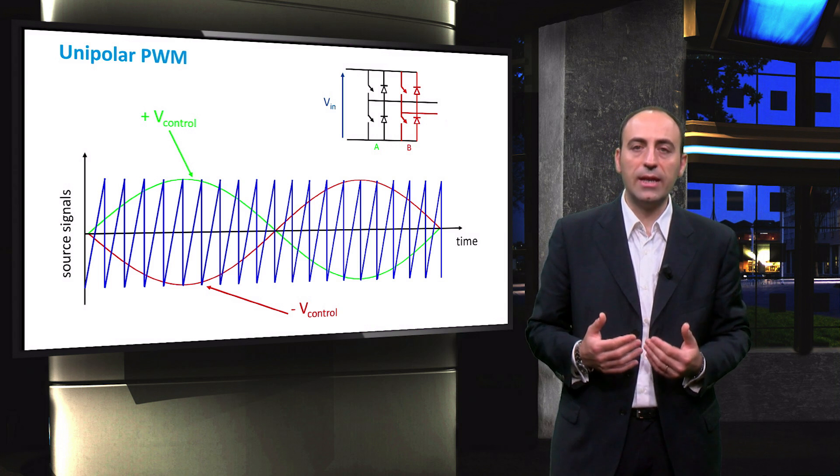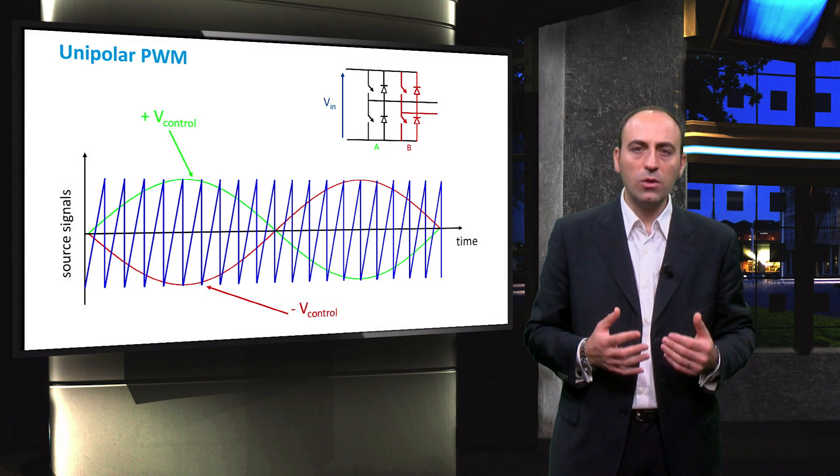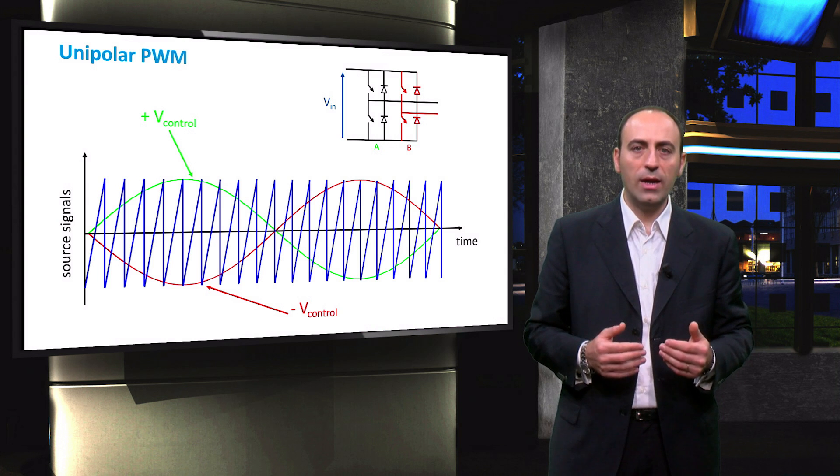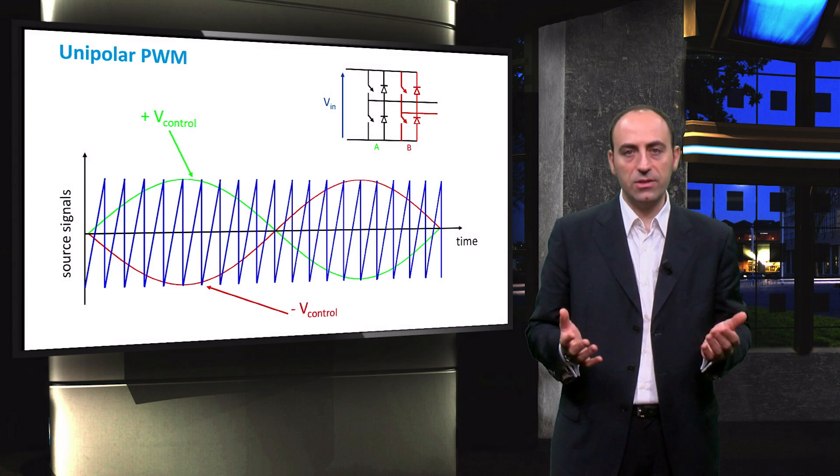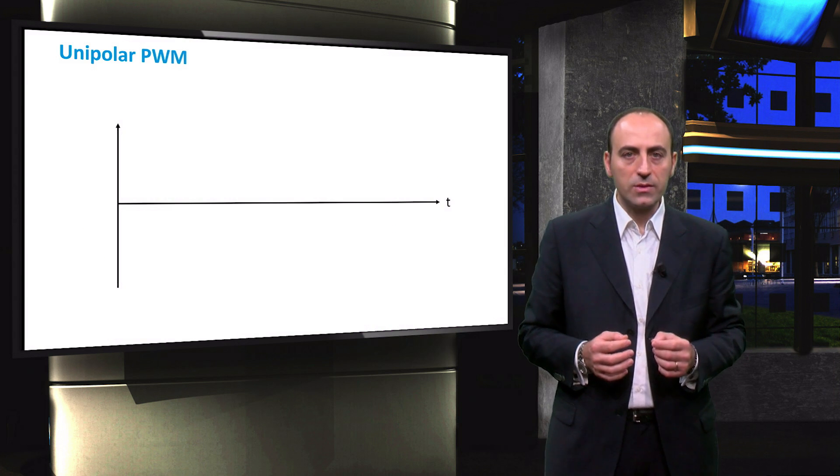For switches in leg B, when minus V control is higher than V sawtooth, the voltage equals the input voltage, while in the other case the voltage is again zero. Let's see now what the results of the PWM unipolar scheme are.